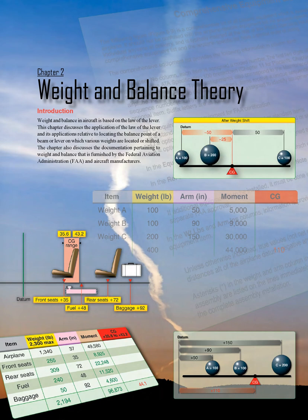Chapter 2: Weight and Balance Theory Introduction. Weight and balance in aircraft is based on the law of the lever. This chapter discusses the application of the law of the lever relative to locating the balance point of a beam or lever on which various weights are located or shifted. The chapter also discusses the documentation pertaining to weight and balance furnished by the FAA and aircraft manufacturers.